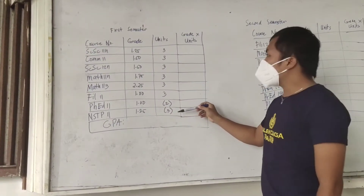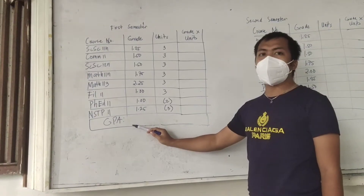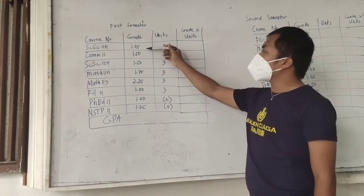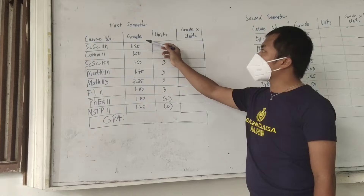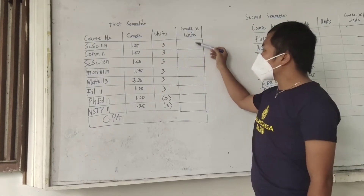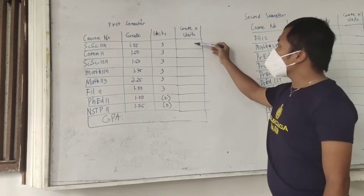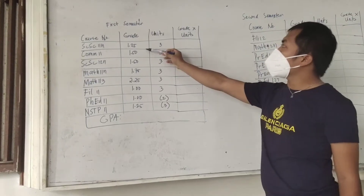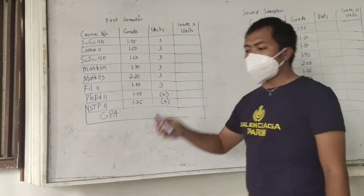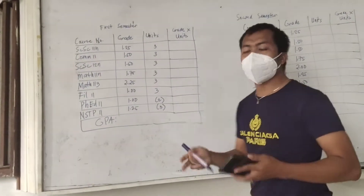For us to be able to compute the GPA, we have to know first the student's grade and the corresponding units. We are going to multiply the grade and the number of units. You should prepare your calculator so it's easier to compute.